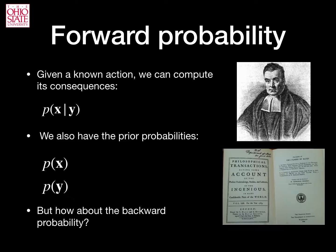Let us start with the forward probability. That means we want to compute the conditional probability, p of x given y. We also need to know the prior probabilities, p of x and p of y. Bayes was interested in the estimation of the conditional probabilities. But notice that given two random vectors, or variables, x and y, one probability is much easier to interpret and thus estimate than the other.